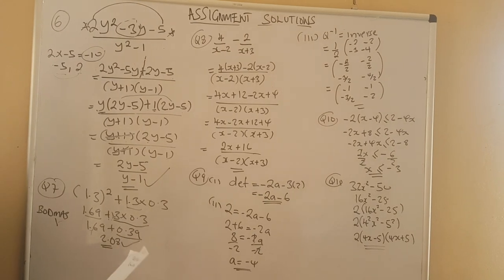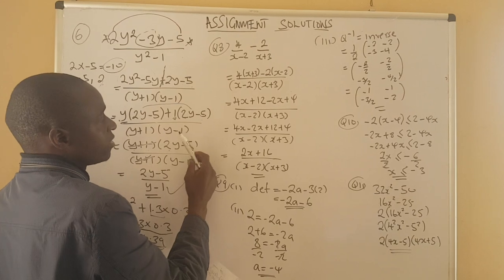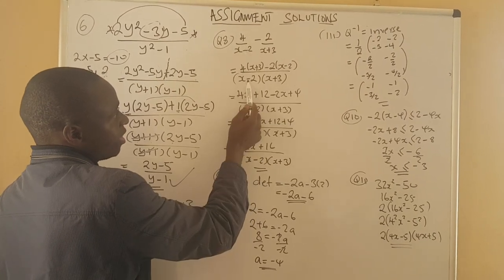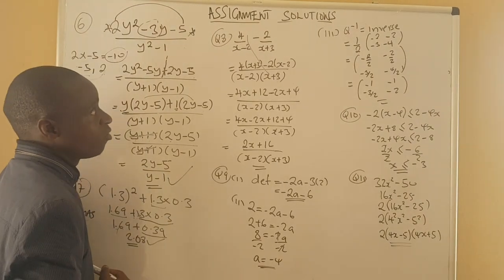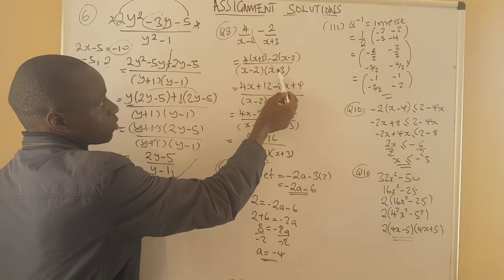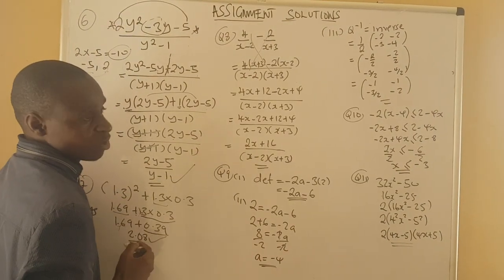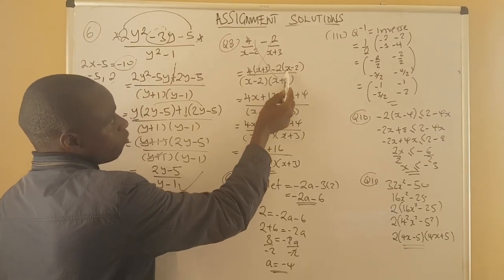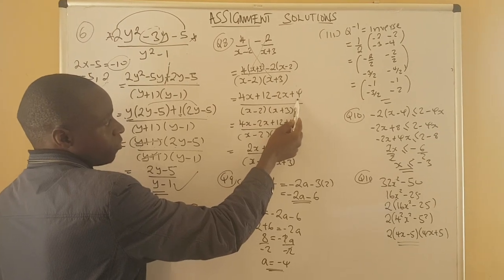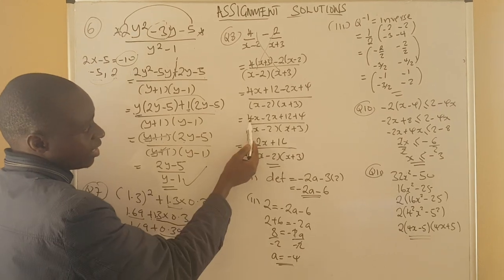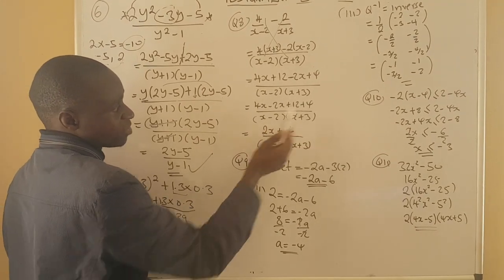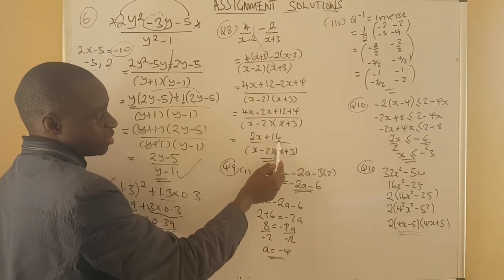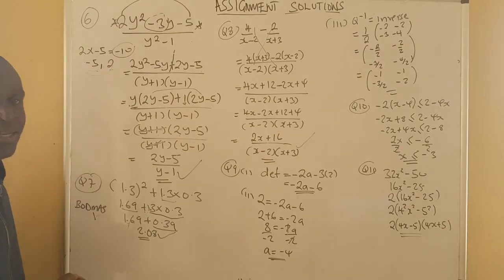Question 8 was based on simplifying a single fraction. We find the common denominator, which is x minus 2 times x plus 3. Expanding the numerators: 4 times x plus 3 gives 4x plus 12, and minus 2 times x minus 2 gives minus 2x plus 4. Collecting like terms: 4x minus 2x gives 2x, and 12 plus 4 gives 16. So the final answer is 2x plus 16 over the common denominator.